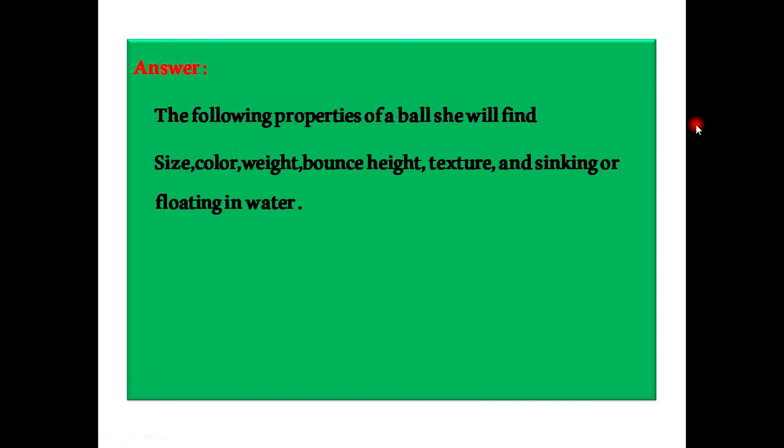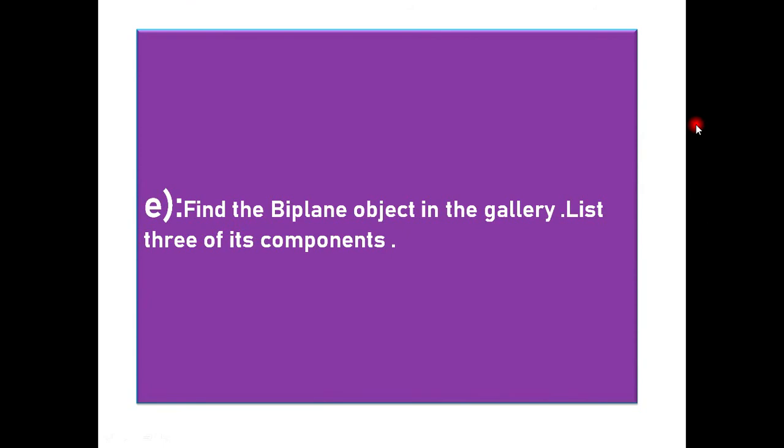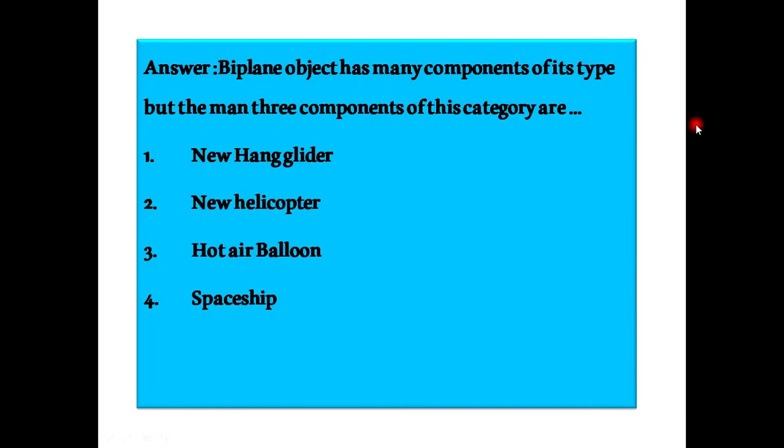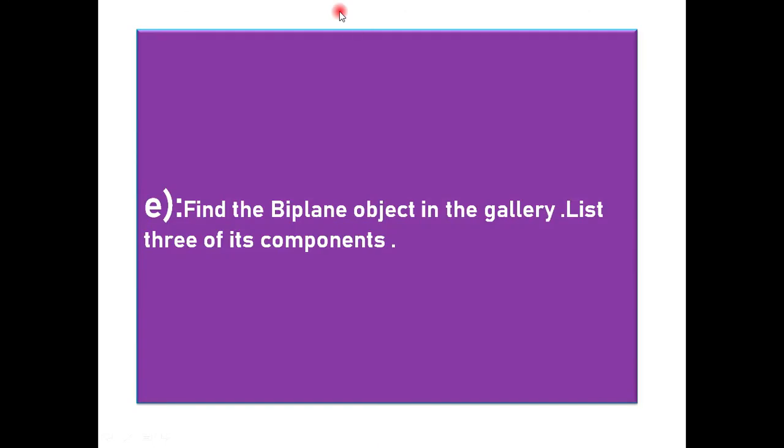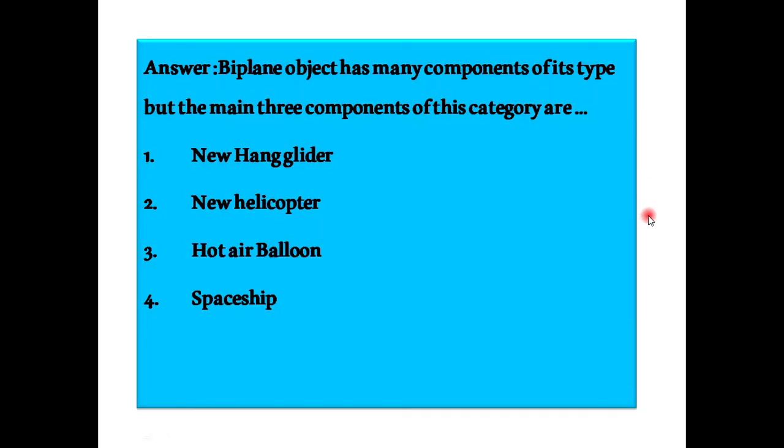E: Find the biplane objects in the gallery. List three of its components. Answer: Biplane object has many components of its type, but the main three components of this category are: 1. New Hang glider, 2. New helicopter, 3. Hot air Balloon, 4. Spaceship.